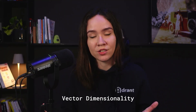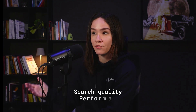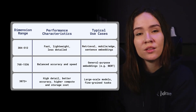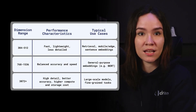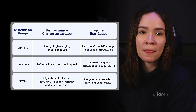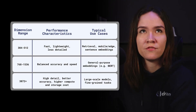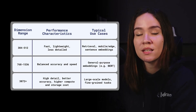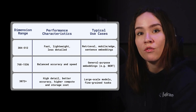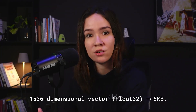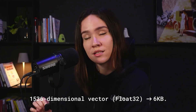Let's talk about vector dimensionality and what it means. The choice of dimensionality affects both search quality and performance. The rule of thumb is that smaller dimensions — usually between 384 to 512 — are faster and more performant, but also have less detail about that vector or point. For mid-sized dimensions, roughly 768 to 1,536, that's a good balance between performance and accuracy. If we're working with over 3,000 dimensions, that's a lot of precision but it can come at the cost of performance. One vector with 1,536 dimensions in float32 takes about 6 kilobytes of memory.